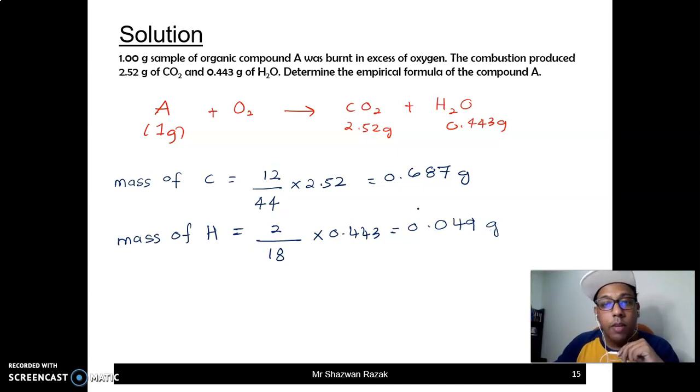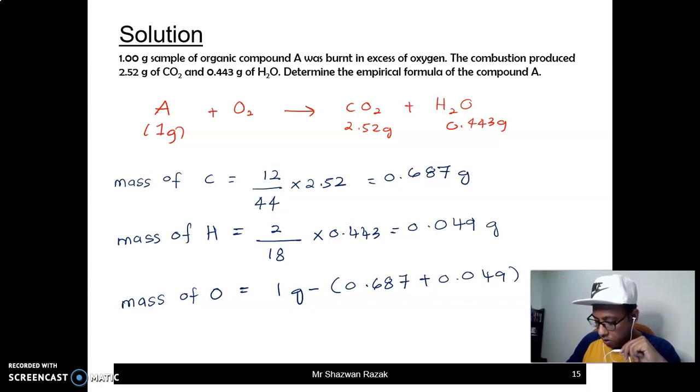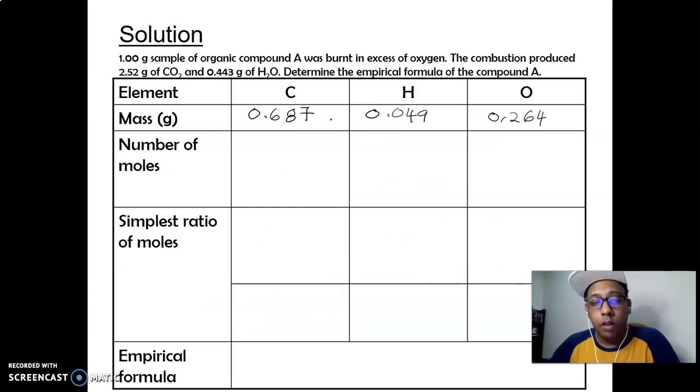Kalau kita tambah semua, nilai dia belum lagi 1 gram. So ada oksigen dekat situ. Mass of oxygen is equal to 1 gram daripada sini, tolak dengan 0.687 tambah dengan 0.049. Dapat, oksigen is equal to 0.264 gram. So this is the mass. So why not you try to solve this and try to give me the answer in the class next time.